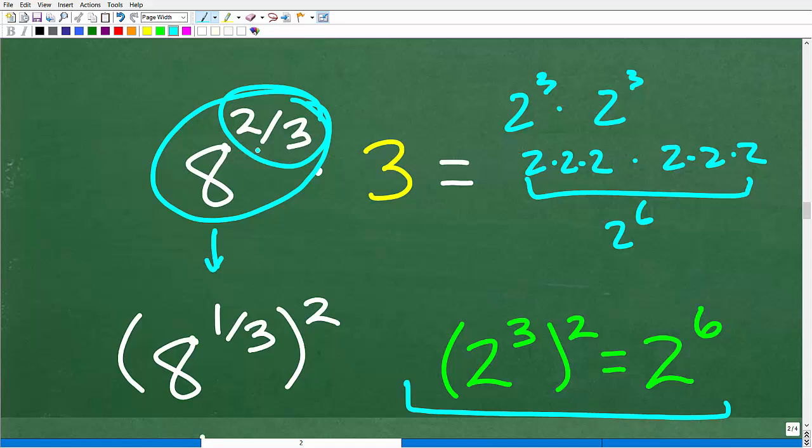Here we have 8 to the 2/3. And we can factor out a 2. This is a little trick that you can use. But we want to do this because we want to think of this 8 as 8 to the 1/3, not 8 to the 2/3. We want to think of this as 8 to the 1/3 because 8 to the 1/3 is the same as the cube root of 8. Let's go back to what we learned about rational exponents and radicals.